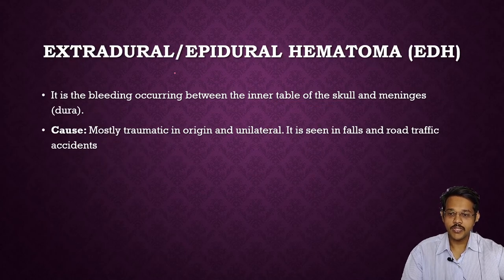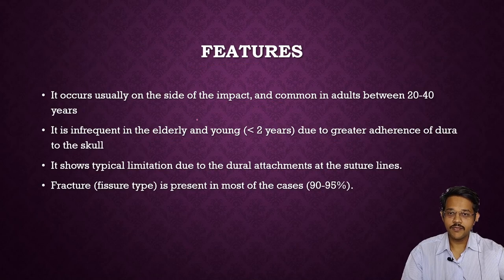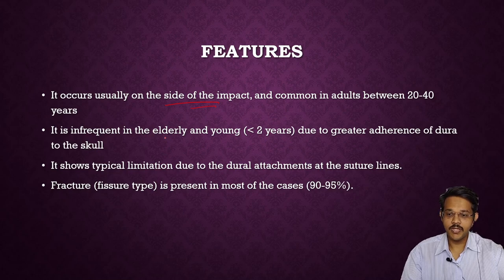Extradural hemorrhage, also known as epidural hematoma or epidural hemorrhage, is bleeding occurring between the inner table of the skull and the meninges (the dura). The cause is mainly traumatic in origin and it is a unilateral condition, seen in falls and road traffic accidents. It occurs on the side of impact and is common between 20 to 40 years of age.